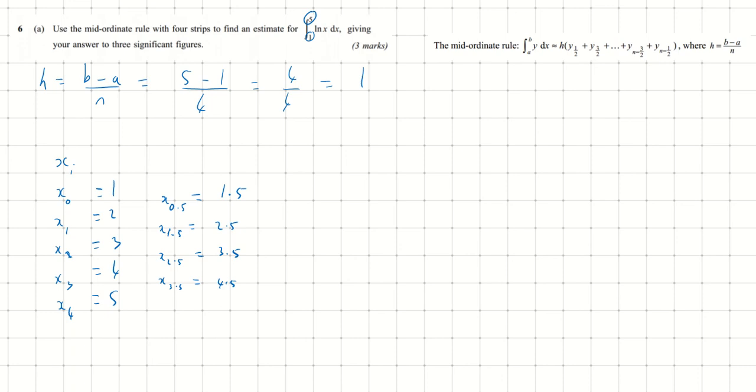This is the key difference between the mid-ordinate rule and the trapezium rule. The trapezium rule doesn't need these middle ordinates. These are the x values we're going to use. We also need y values. The y values, yi, are equal to the function applied to xi. The function is ln(x), so yi = ln(xi). We need the mid-ordinates: y0.5, y1.5, y2.5, and y3.5.